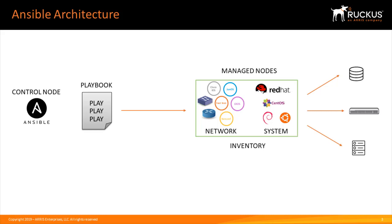Last but not least is the inventory file. The inventory file is a list of nodes or network devices that the playbook will be run against. The managed nodes in the inventory can be combined into different groups — for example, you can have an ICX aggregation layer, an ICX access layer, or you can have a location like Sunnyvale. This helps with managing the inventory list.